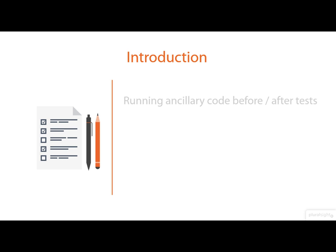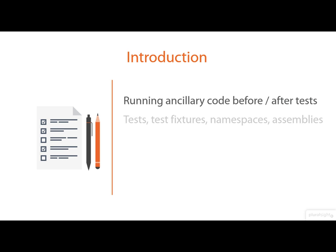We're going to start off by learning how we can run extra code before and after tests run. This could be before and after individual tests in a test fixture, before or after an entire test fixture runs, before and after all of the tests in a specific namespace run, and code that runs before and after all tests in a given assembly.